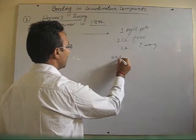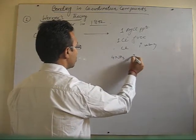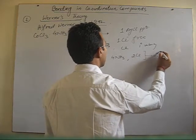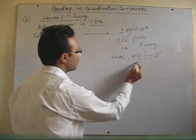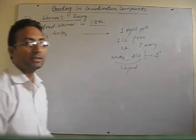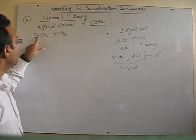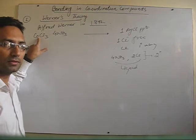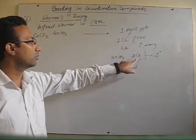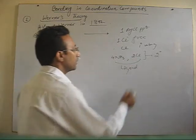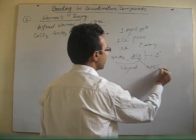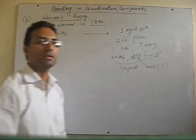Four ammonia and two Cl will satisfy the secondary valency — that means they all will act as ligands. But at the same time, the +3 charge of cobalt has to be satisfied. One Cl outside does that job, and these two Cl inside also satisfy the oxidation state of the metal — that is, its primary valency.